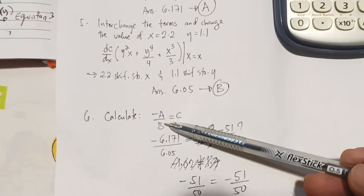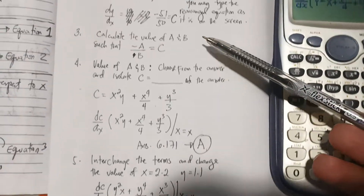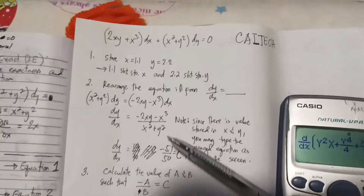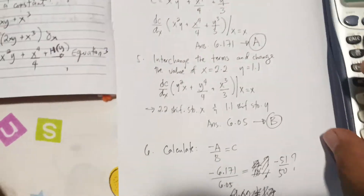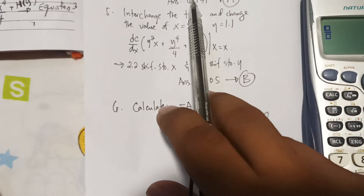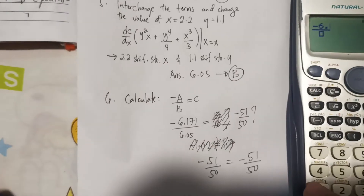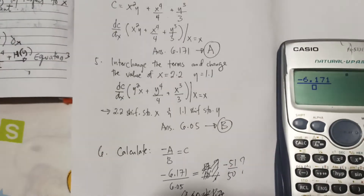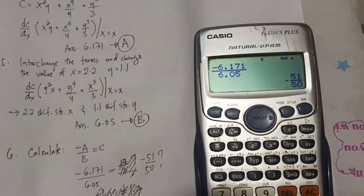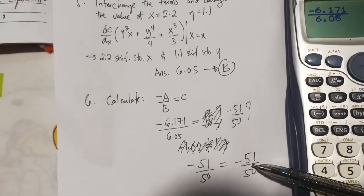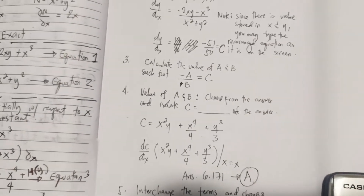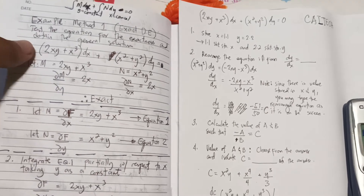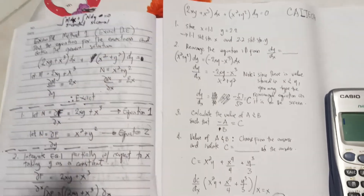Now calculate the value of negative a over b. This should equal c. Negative a is −6.171, and b is 6.05. The answer is negative 51 over 50, which is the same as the value of c. This confirms the chosen answer is the correct solution for this differential equation. That's all — thank you.